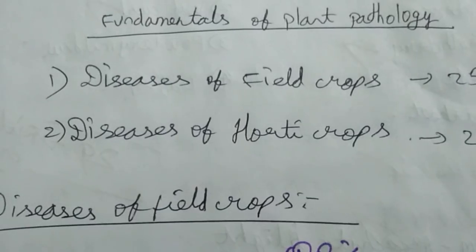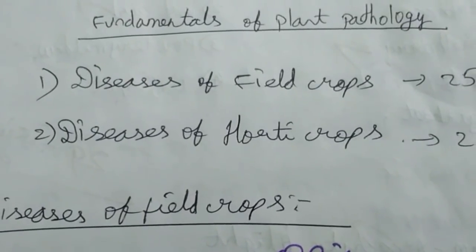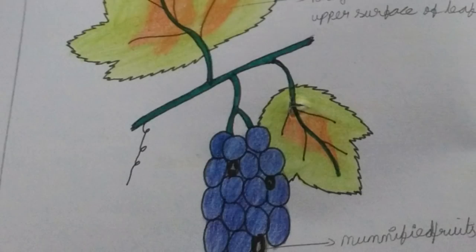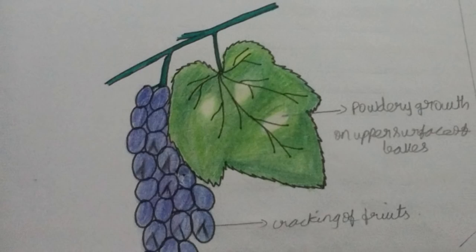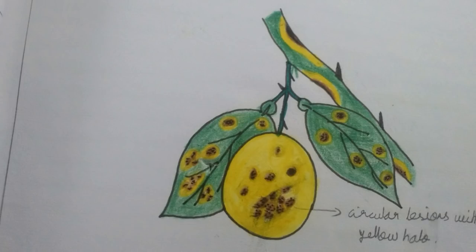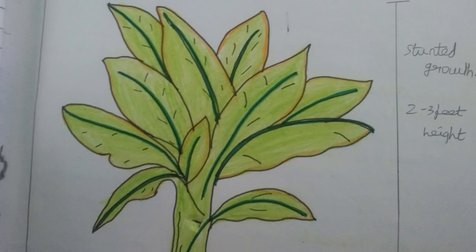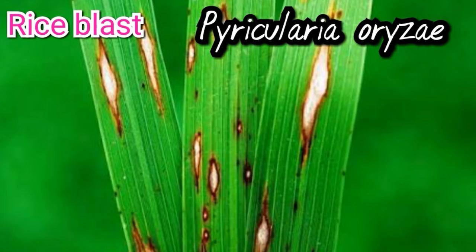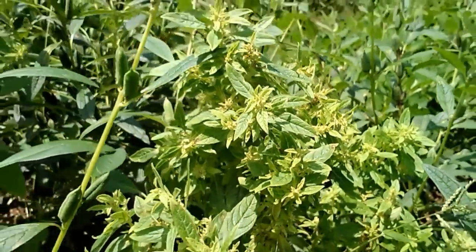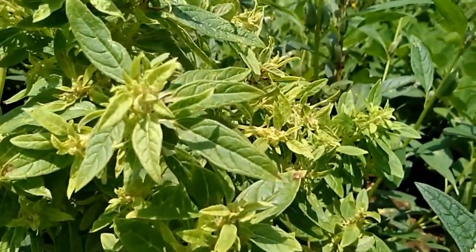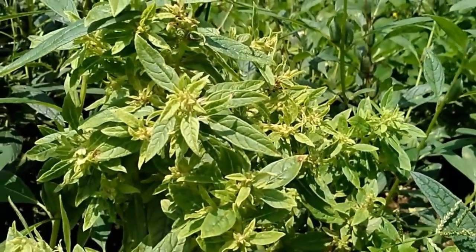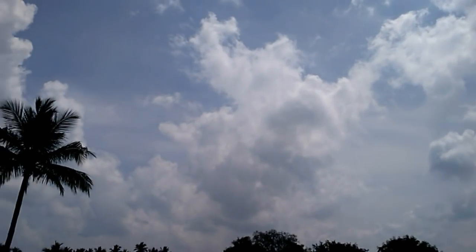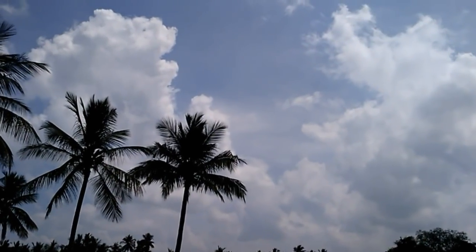Let's talk about the first course. We will divide it into two parts. Let's talk about the fundamentals of plant pathology. We will see the most important diseases — powdery mildew, downy mildew, blast, and diseases of various crops. Now we will see the fundamentals of plant pathology.